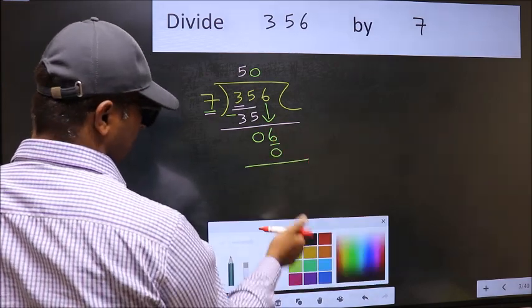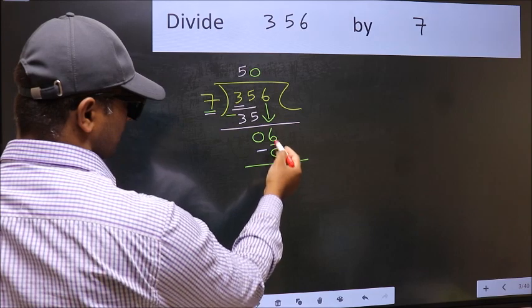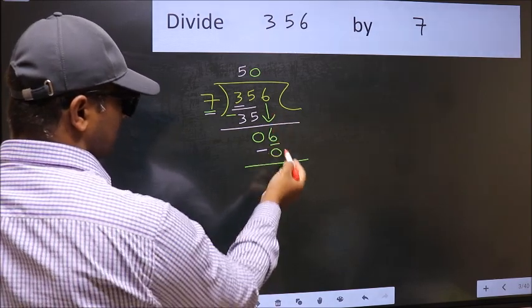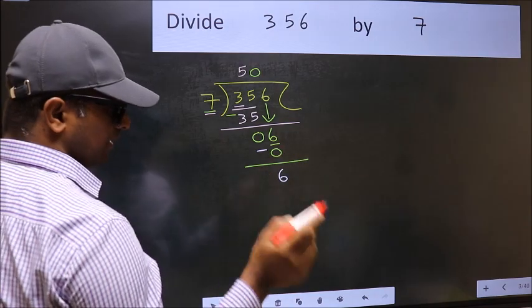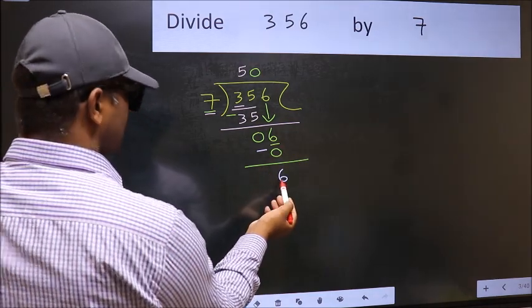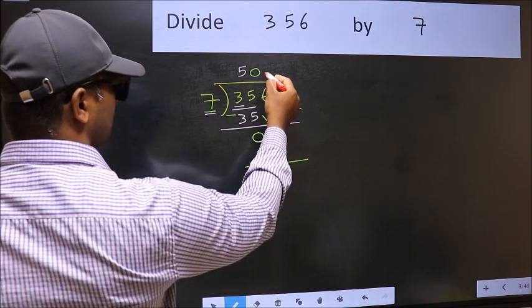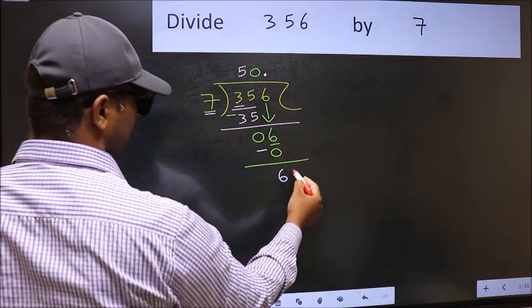Now you should subtract. 6 minus 0, 6. Over here, we did not bring any number down, and 6 is smaller than 7, so now you can put dot and take 0.